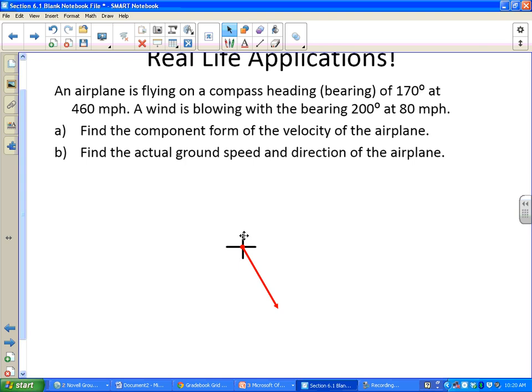So that is my airplane vector. I went 170 degrees around. Let's think about some maybe important angles here. This angle right here, if I went around 170 degrees, I have 10 degrees left, and so that means that this angle here would be 90 minus 10, which is 80 degrees. So I might use those later. The magnitude of this vector is the speed, which is 460 miles per hour.